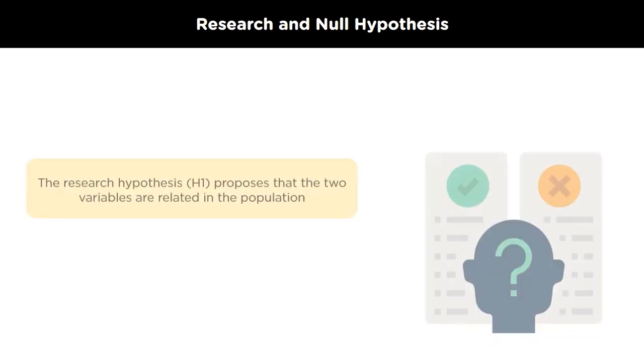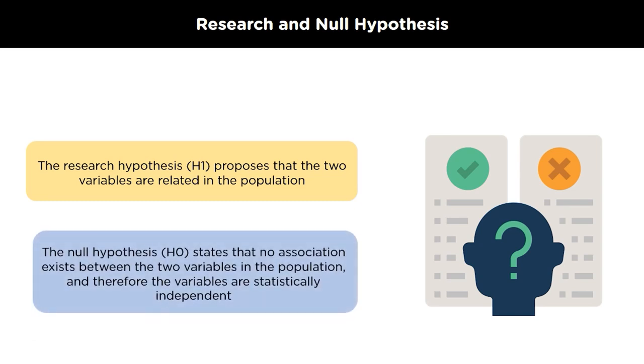Research and null hypothesis. The research hypothesis, which is also denoted by H1, says that the two variables are related in the population. The acceptance of the research hypothesis follows the rejection of the null hypothesis. The null hypothesis, H0, says that there is no association between the two variables and they are statistically independent. The null hypothesis has no bearing on the study's outcome unless it is rejected.